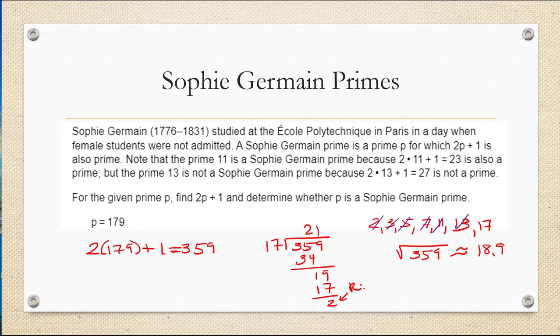So we can conclude that 359 is prime. And that means that 179 is a Sophie Germain prime.